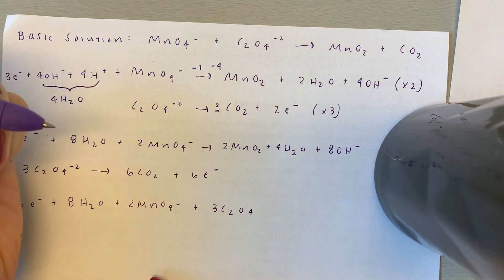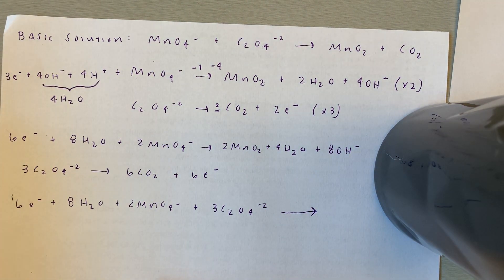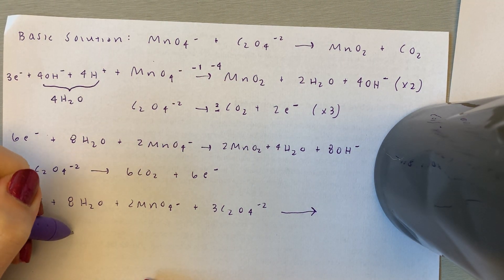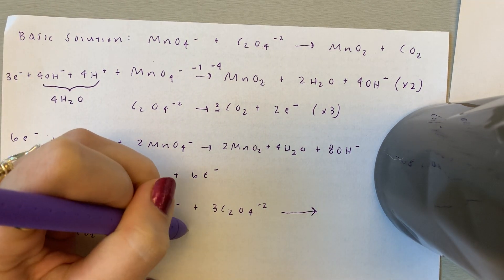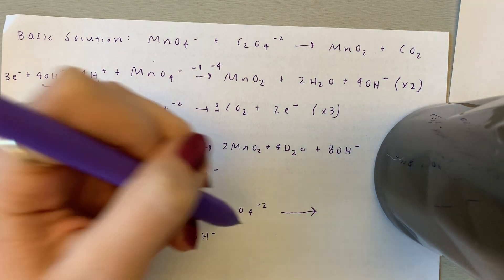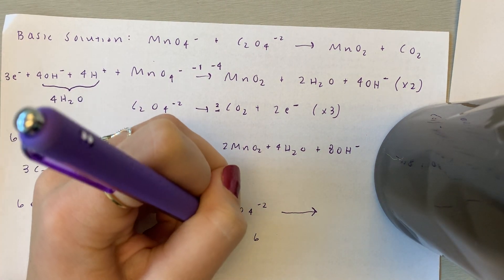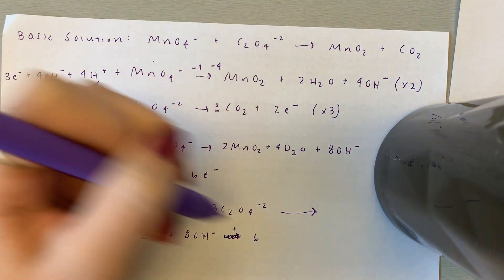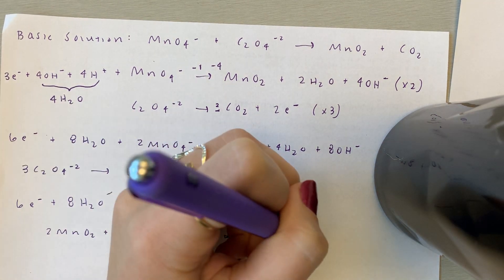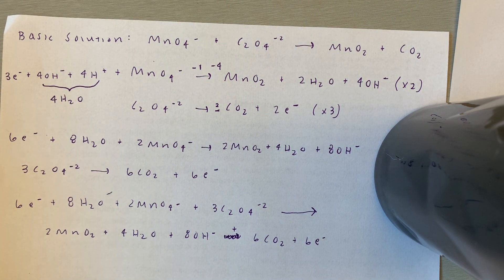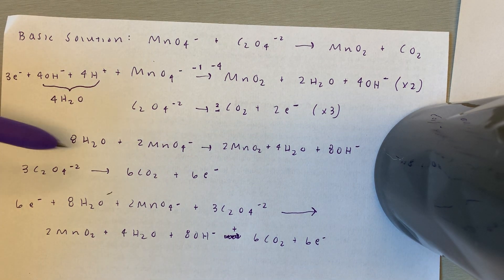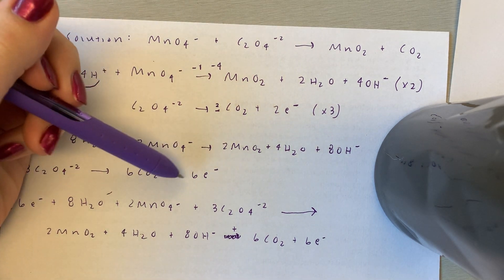3C2O4 minus 2, big arrow, and now we're going to put our products down here. Plus 4H2O plus 8OH minus, goes to 6CO2 plus 6 electrons. But when you're going from step to step, make sure, just like how I did, to put all the reactants on one side and all the products on one side.